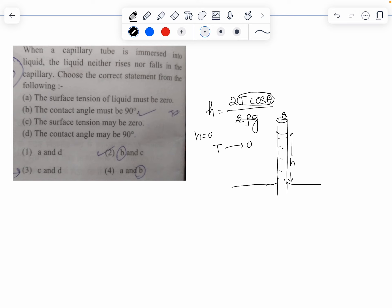And theta may be 90 degrees. This is the contact angle - theta is the contact angle. So the answer will be: the contact angle may be 90 degrees or surface tension may be 0. So c and d will be the answer.